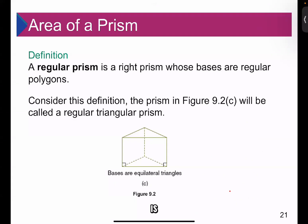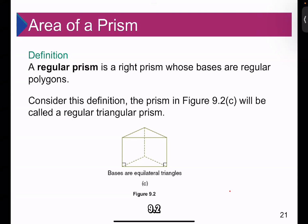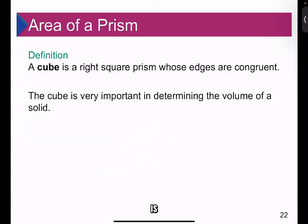A regular prism is a right prism whose bases are regular polygons. Regular polygons have equal sides and equal interior angles. The prism in figure 9.2C is called a regular triangular prism. A cube is a right square prism whose edges are all congruent. The cube is very important in determining the volume of a solid.